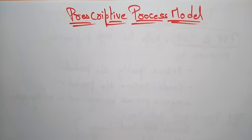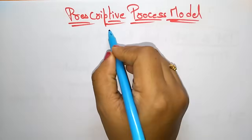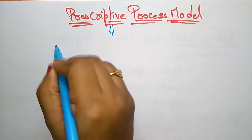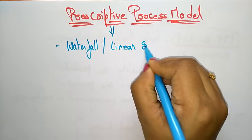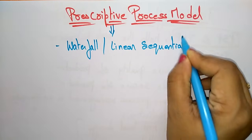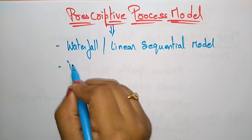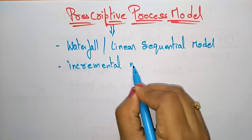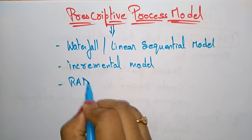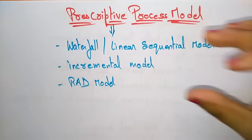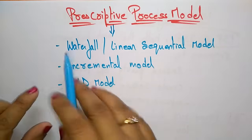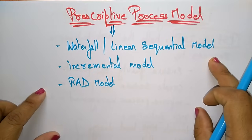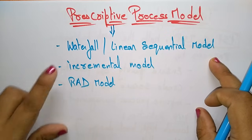Coming to the next topic: the prescriptive process model. The different types of prescriptive process model are the waterfall model, also called the linear sequential model, the incremental model, and the RAD model. These three come under the prescriptive process model. Whenever a question comes about this topic, write about these three with diagrams and explanations.